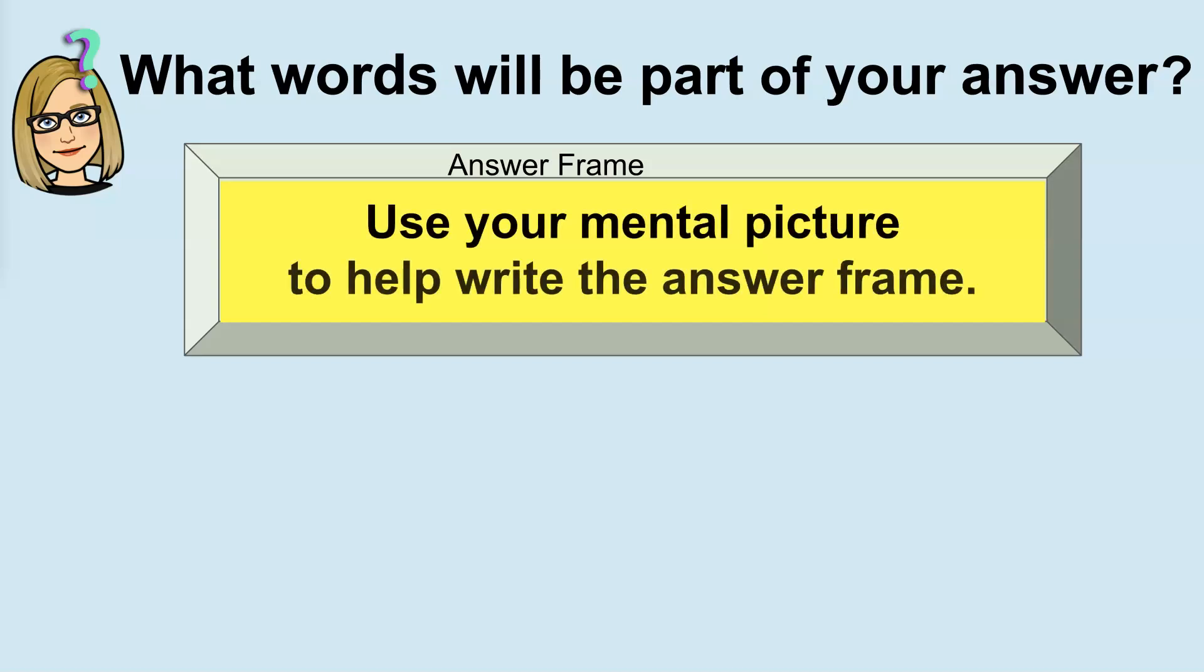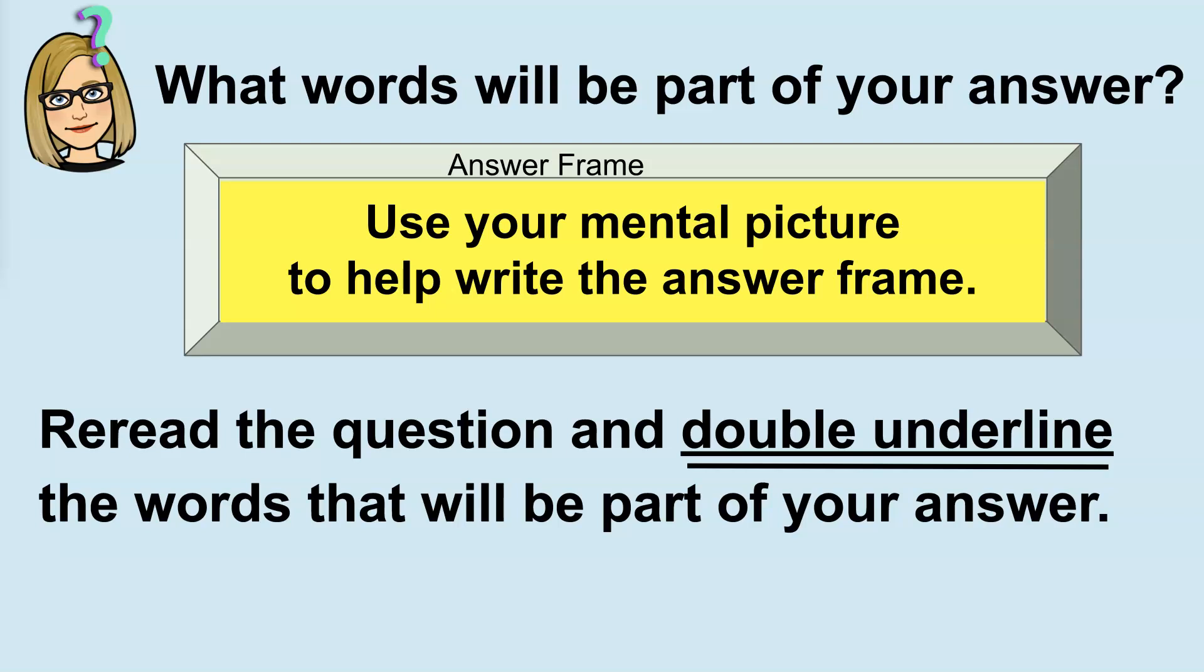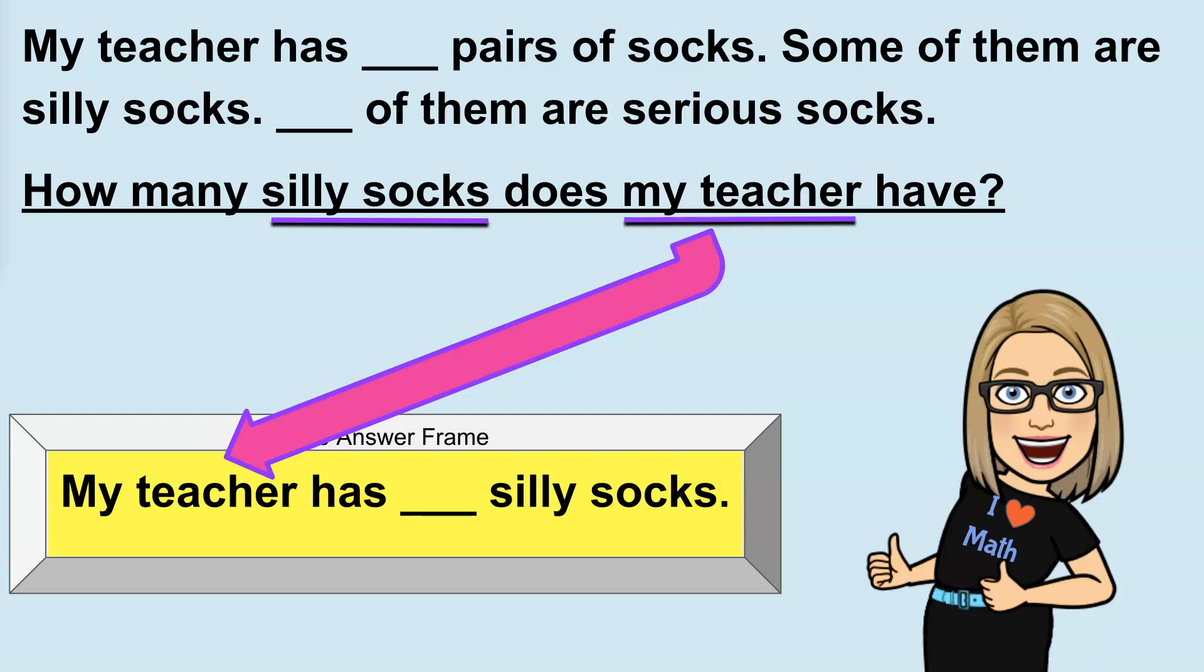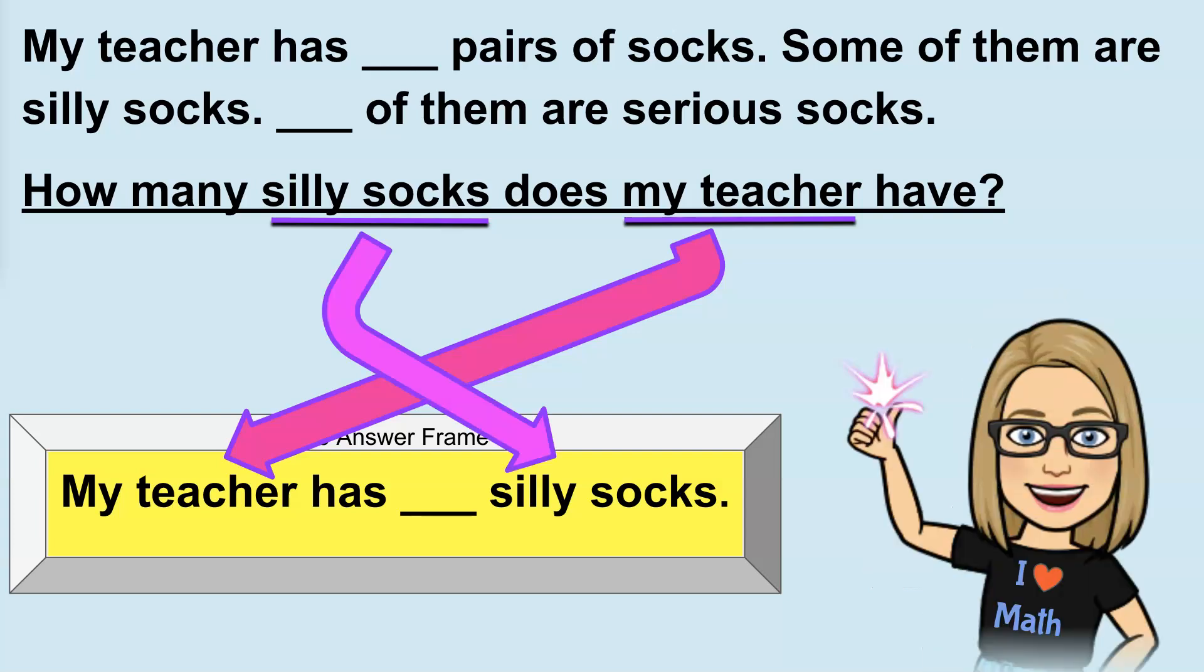What words will be part of your answer? Use your mental picture to help write the answer frame. The answer frame are the words that will surround the numerical part of your answer. So, we're going to reread the question and double underline the words that will be part of your answer. Using our mental picture, we know that what's important are socks and the socks of our teacher. But what we're trying to find out is how many silly socks. So, we double underline silly socks and my teacher. Those are the words you're going to use in your answer frame. My teacher has blank silly socks. Now, the answer frame is ready to go.